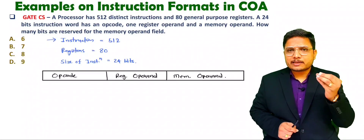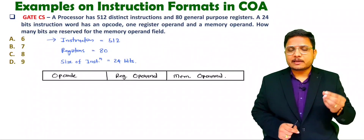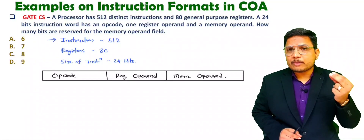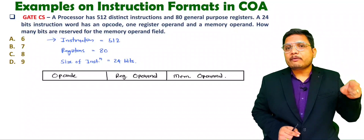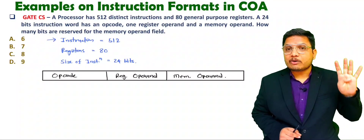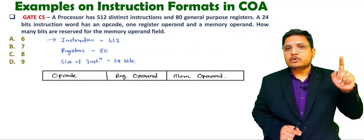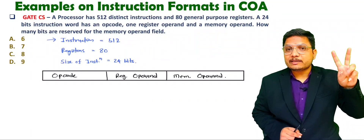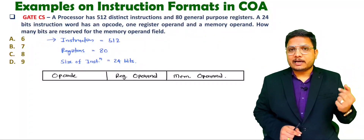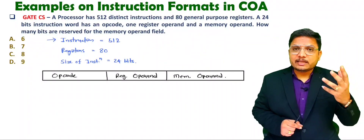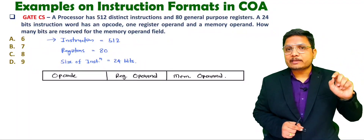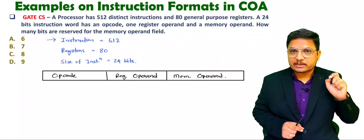You should understand a few basic things: if you have 2 instructions then 2 to the power 1 means one bit is required. If you have 4 instructions then 2 to the power 2 means two bits can represent four different instructions. For example, if you have 16 instructions then 2 to the power 4 means 4 bits are required to represent 16 different instructions.